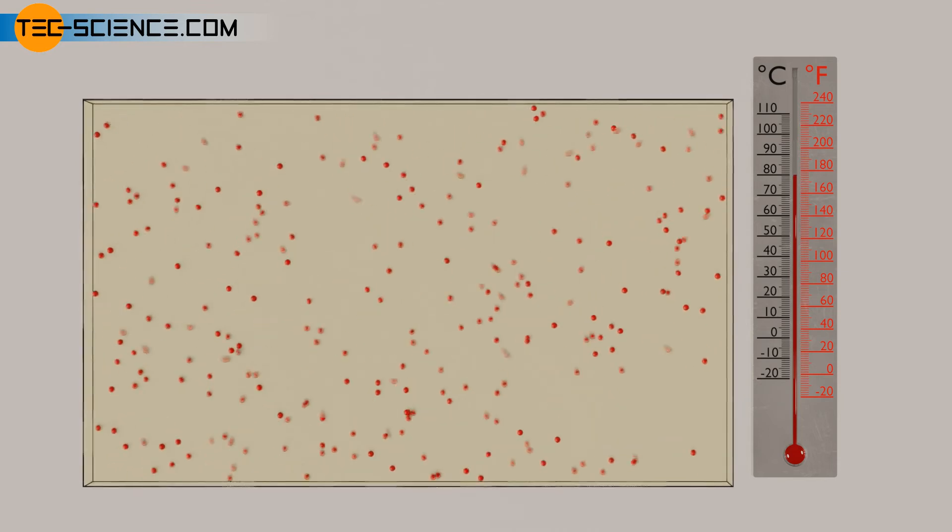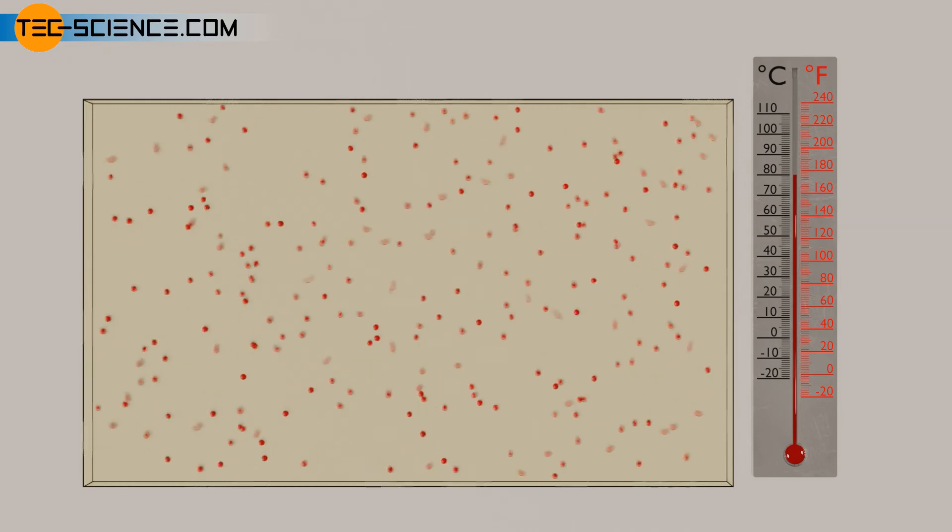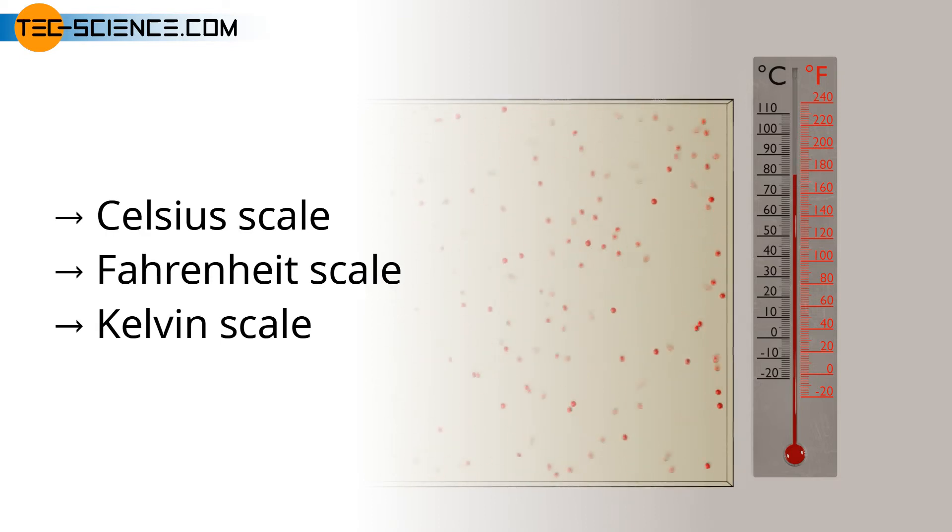Depending on which reference points are used to determine the scale, and thus to measure the temperature, there are three main temperature scales: the Celsius scale, the Fahrenheit scale, and the Kelvin scale. These different temperature scales are described in more detail in the following.